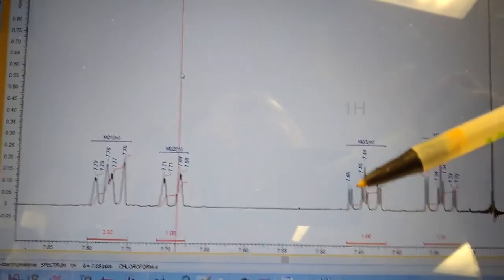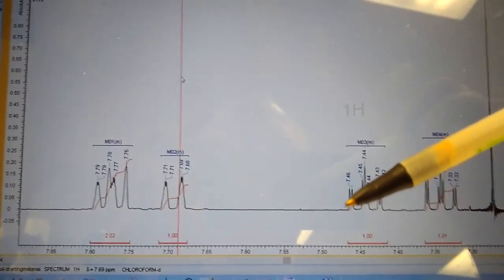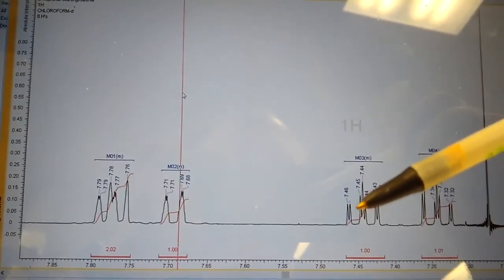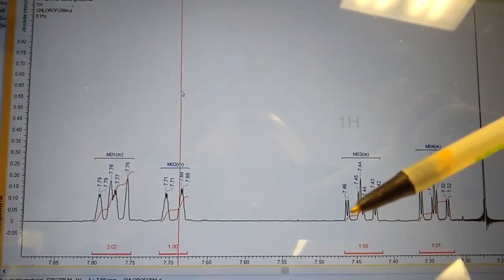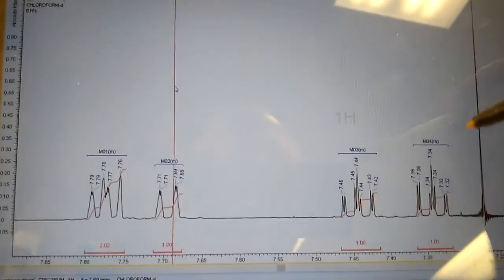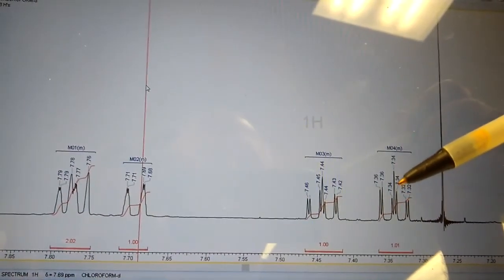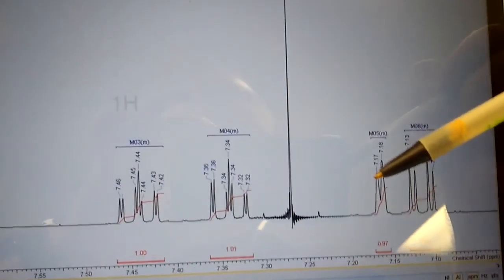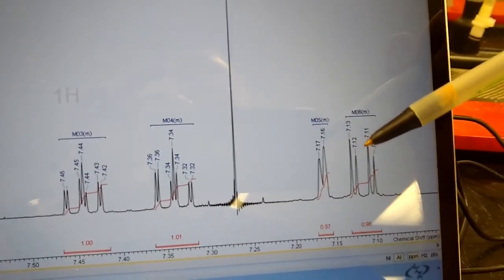Over here we're going to call that a one H triplet. It gets more complicated than just saying doublet, triplet, but for this class you would just call that a triplet where it's equal distance from here to here and then equal distance from this middle one to that one. And that would also be a one H triplet, one H, equal distance here and then same to here. That would be a doublet.